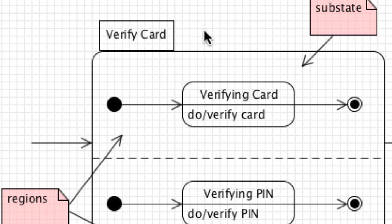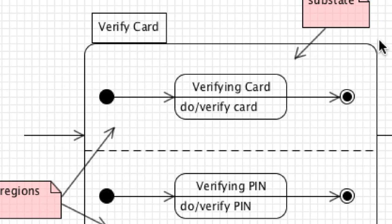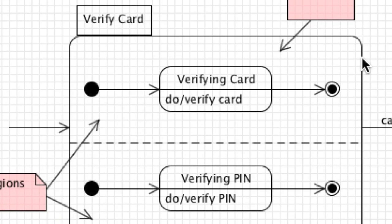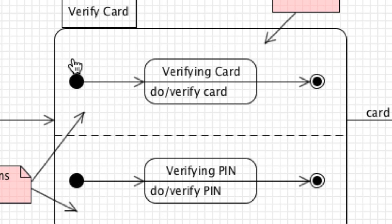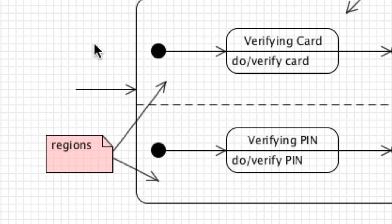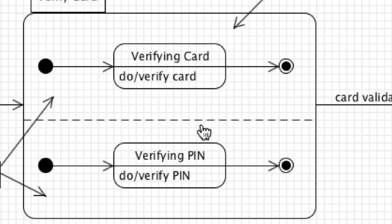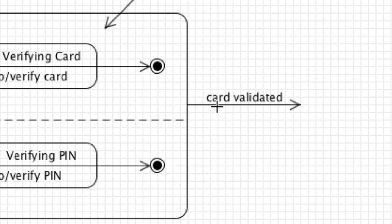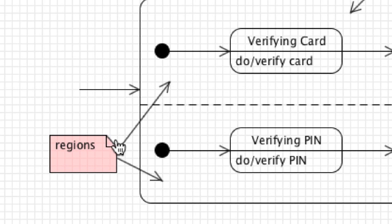Composite states occur whenever two or more states are active at one time, and each is called a substate. For example, 'verify card' might have two substates — verifying the card and verifying the PIN simultaneously — divided into regions using a dashed line. A transition arrow comes in, and after both substates complete, a 'card validated' transition moves to the next point. You can also draw two arrows out and fork them into one, or fork one arrow into two substates going in.